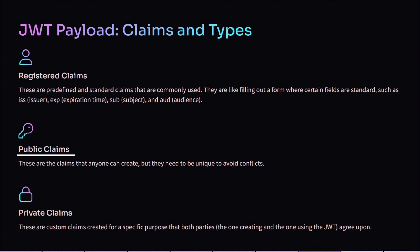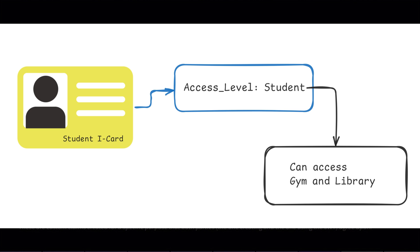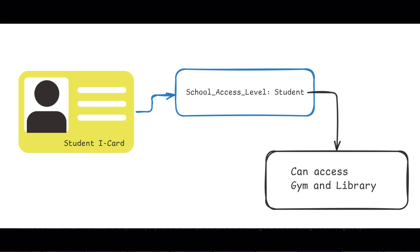Then we have public claims. These are claims that anyone can create, but they need to be unique to avoid conflicts. If two companies use the same claim name but with different meanings, it could cause confusion, so it is recommended to use a naming convention to ensure uniqueness. For example, imagine a school ID card that gives access to certain facilities like a gym or library. The card might have a public claim like 'school_access_level' with values of 'student' or 'staff', clearly indicating what areas you can access without confusion with other access types.